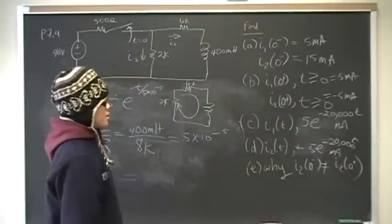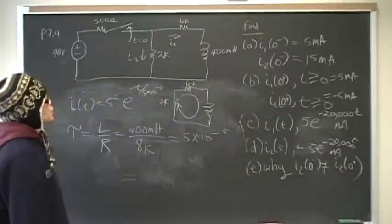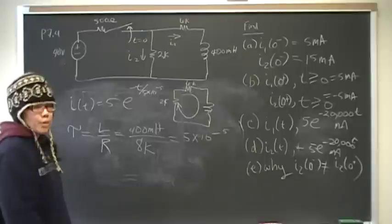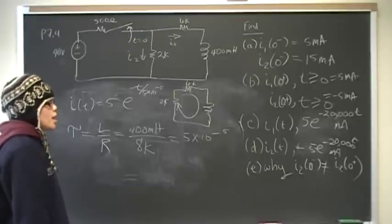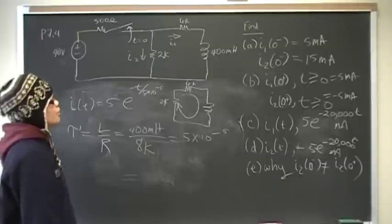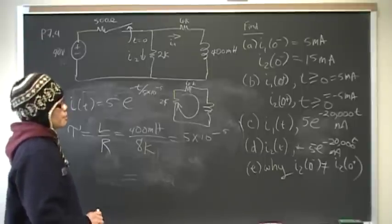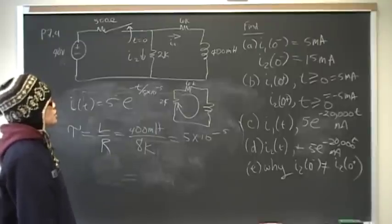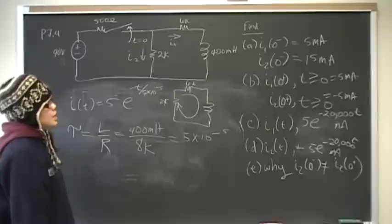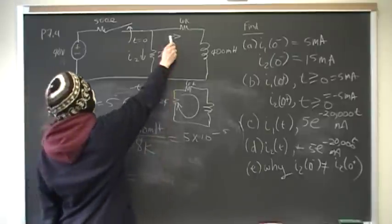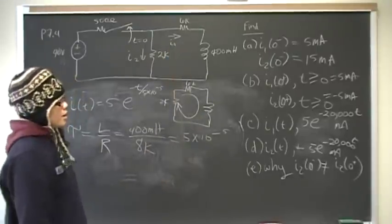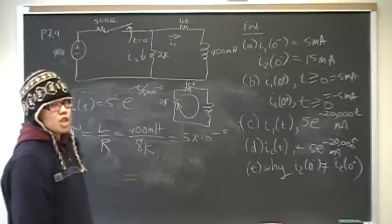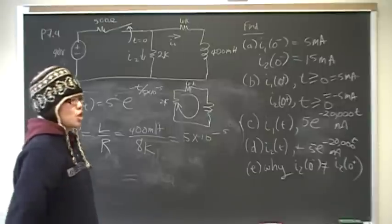The question is: why does the branch current through the 2k ohm resistor change differently before and after the switch? The answer is that even though current through an inductor cannot change instantaneously, current through a resistor can and does change instantaneously. Once the switch opens, the 15 milliamp component goes away, and you're left with the 5 milliamps traveling through the inductor going in the opposite direction. So I2 changes because current through a resistor changes instantaneously.